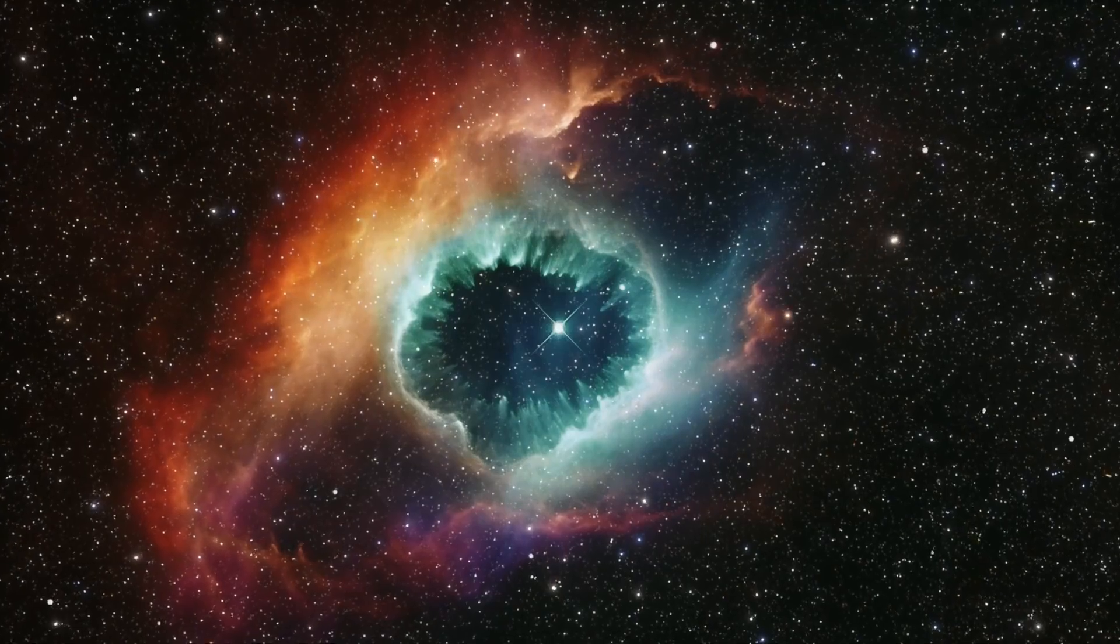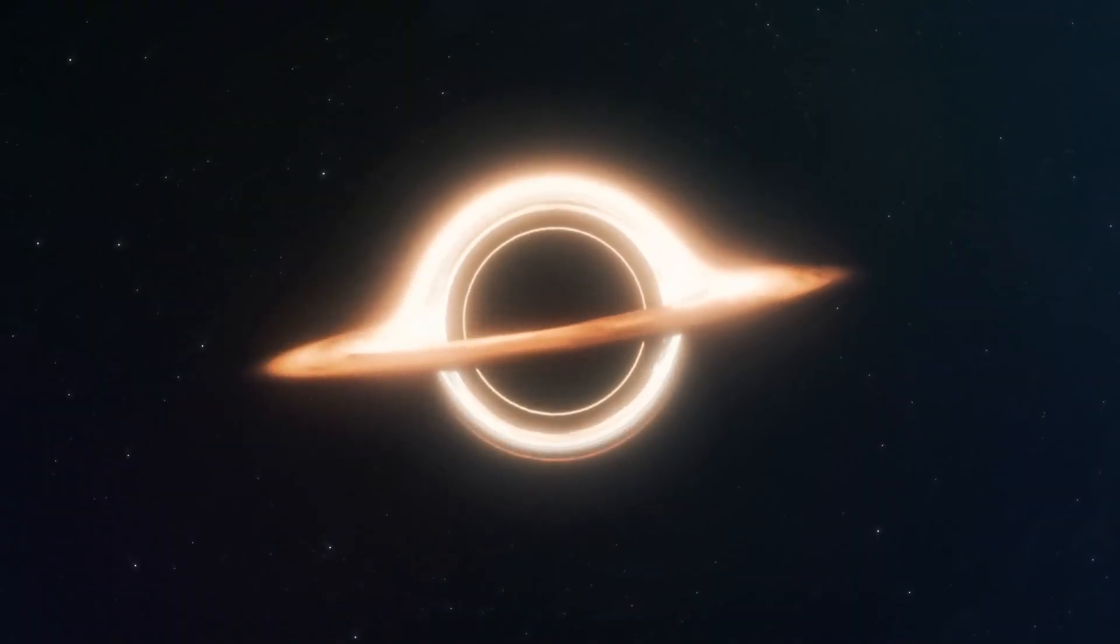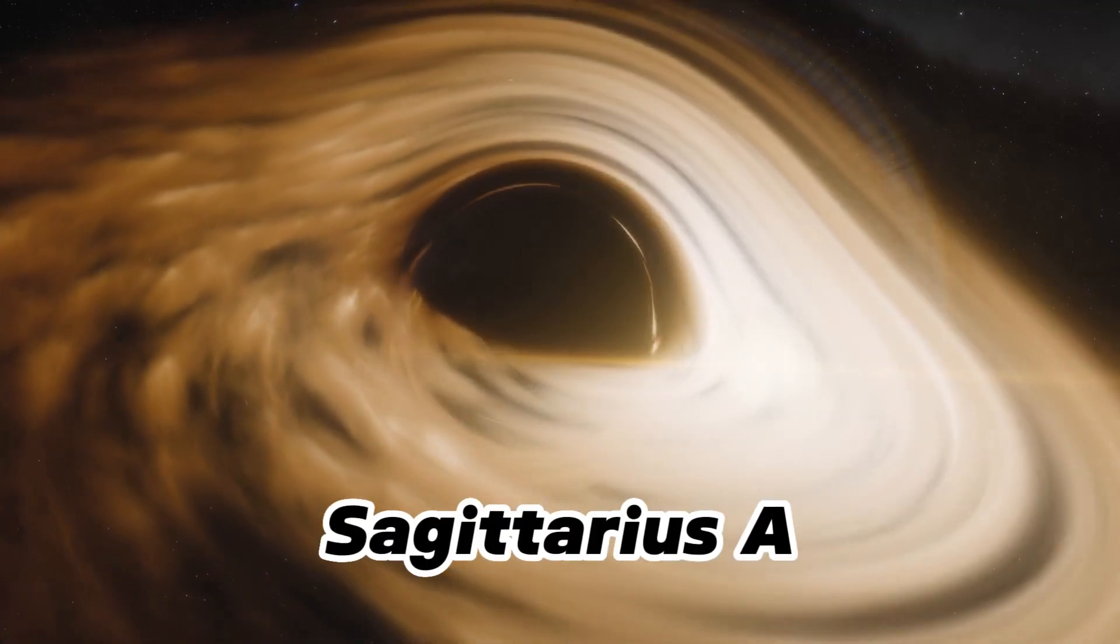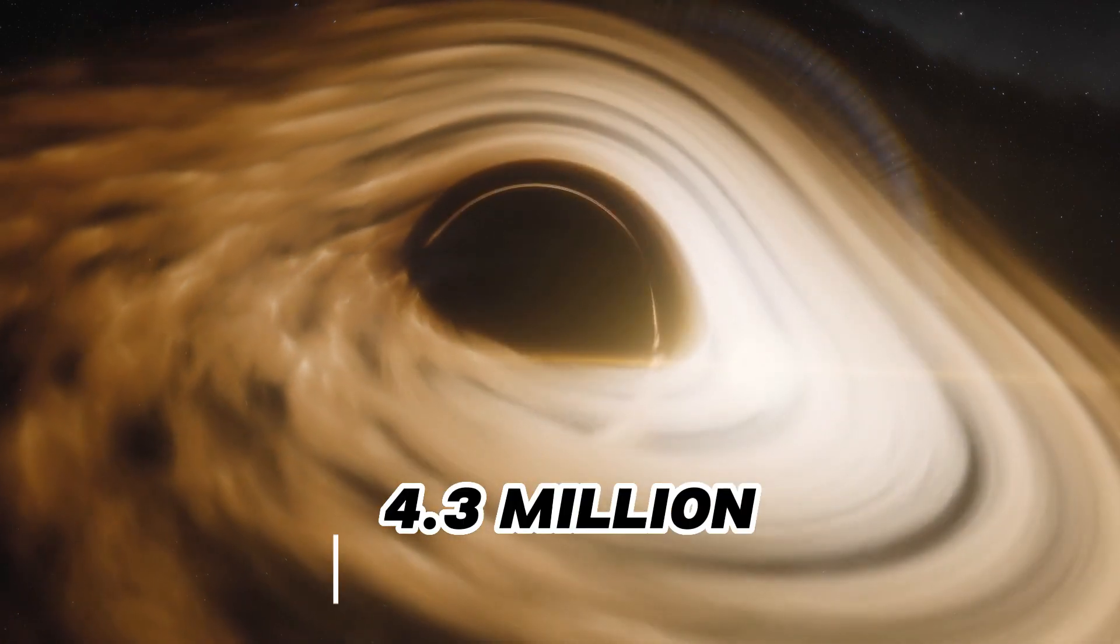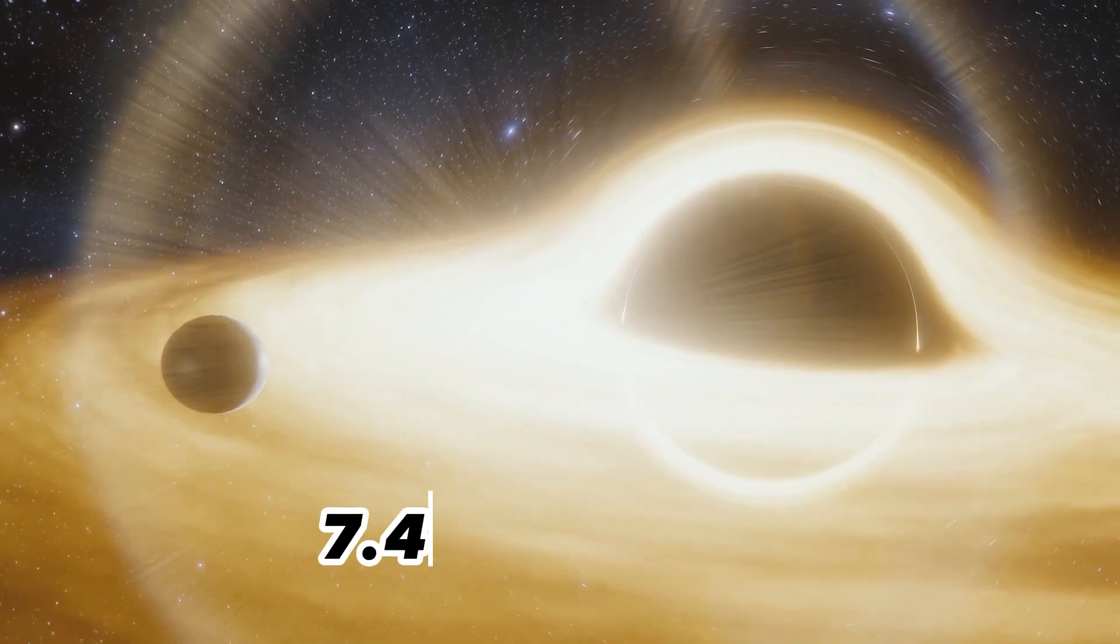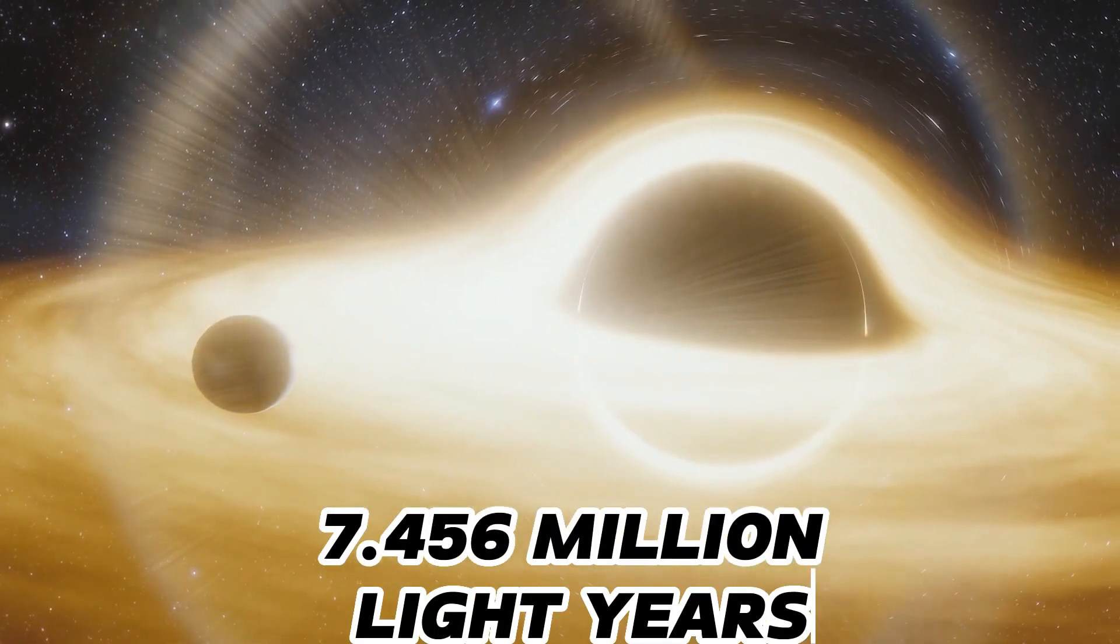Like most other galaxies out there, it contains a supermassive black hole called the Sagittarius A. Sagittarius A has a mass of 4.3 million solar masses, and its radius is 7.456 million light-years.